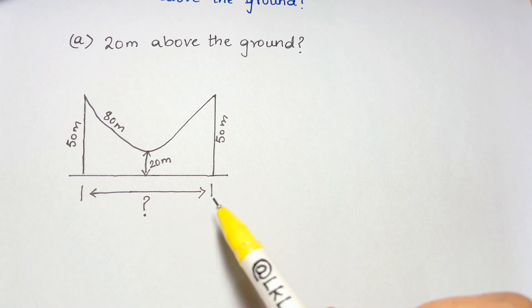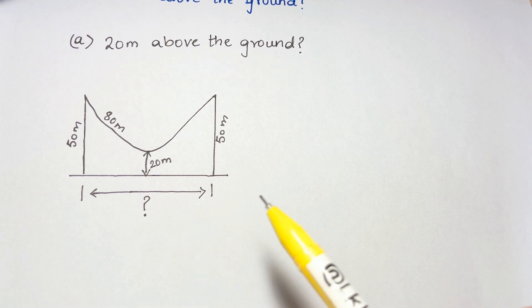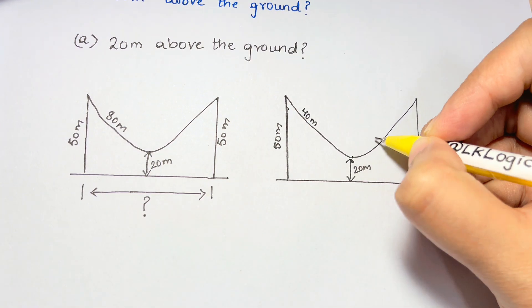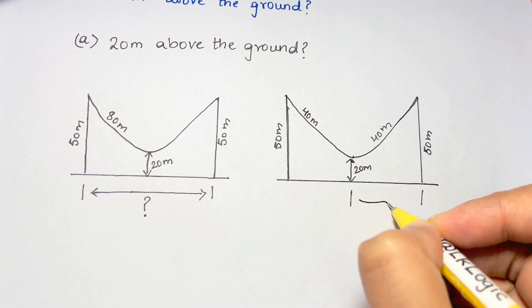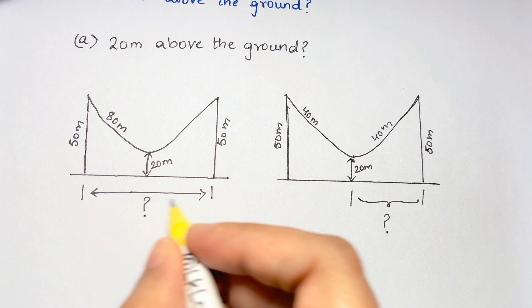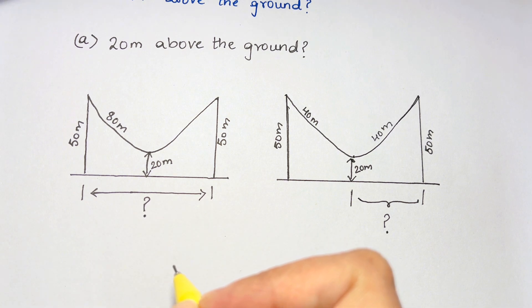The problem is solved using symmetry and a convenient coordinate system. First we'll split up the cable into two lengths of 40. Next we'll consider only the distance from the center of the cable to one of the poles, we can then double that distance to get the distance between the two poles.